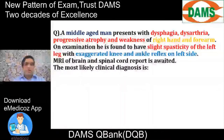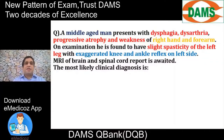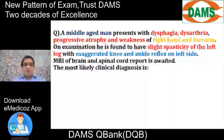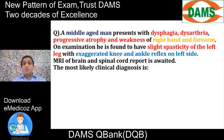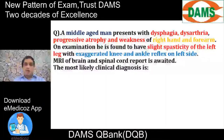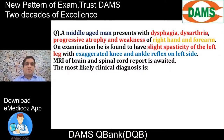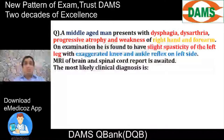The knee and ankle jerk are exaggerated on the left lower limb, so the left lower limb is in a phase of UMN paralysis. We have a patient with a lesion in the medulla — bulbar palsy — with the right upper limb showing LMN paralysis and the left lower limb showing UMN paralysis. All this combined is characteristic of motor neuron disease.